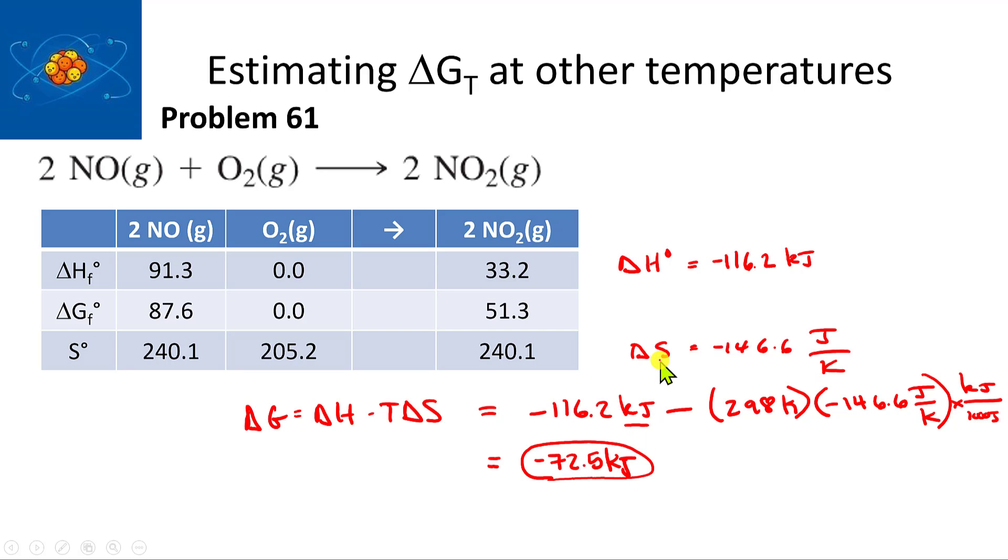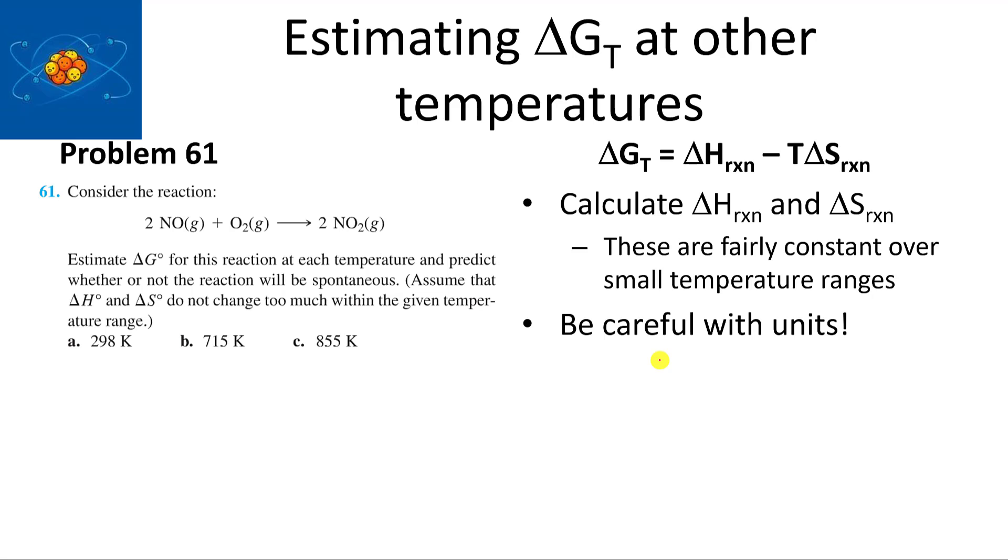Next we'll look at 855 kelvin. Delta G equals delta H, which was minus 116.2 kilojoules, minus T, which is 855 kelvin, times minus 146.6 joules per kelvin. And again, using 1,000 joules per kilojoule for unit conversion.